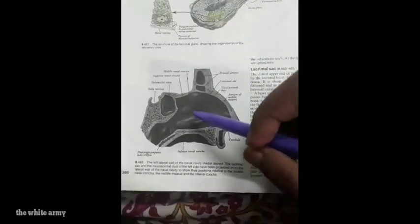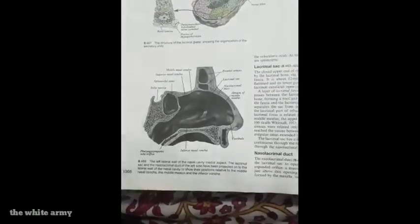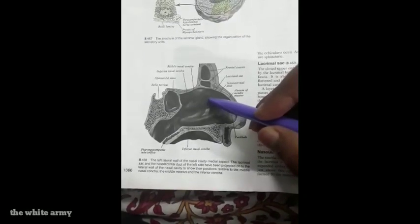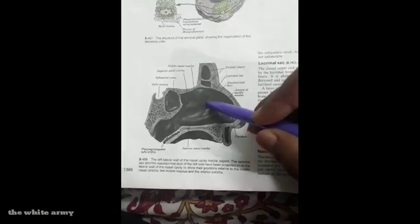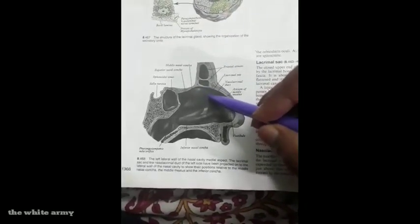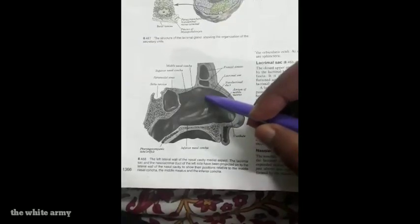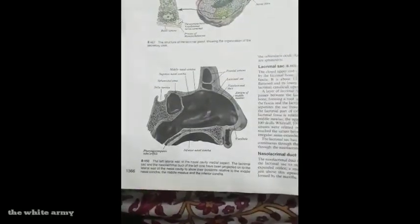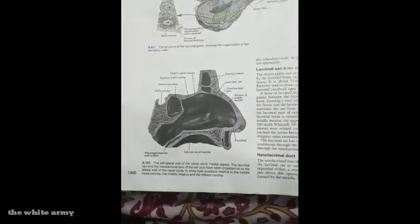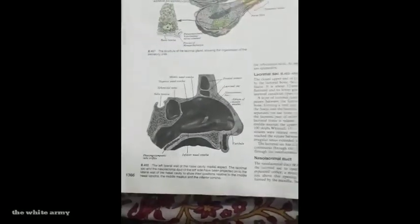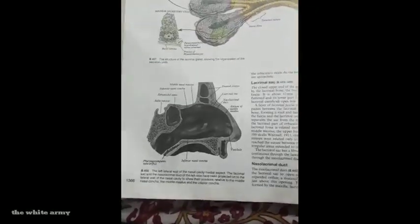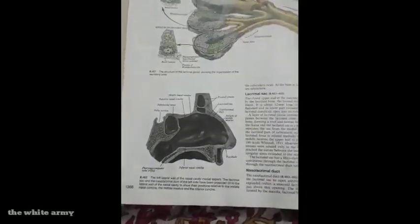Viewed through the lateral surface of the nasal cavity, the lacrimal sac is related inferiorly to the middle meatus and superiorly to the anterior group of ethmoidal air cells. This relationship is clinically important for understanding the spread of infection and inflammation involving the lacrimal sac.